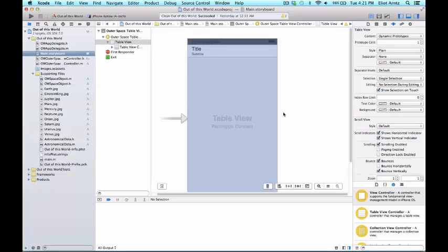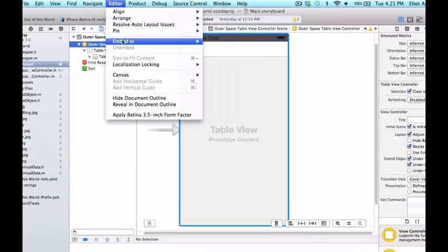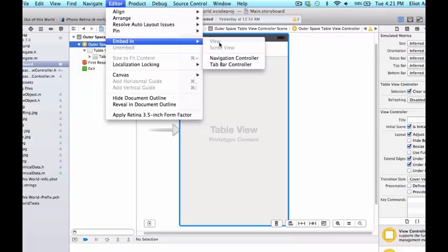So now that we've learned all about navigation controllers, how do we add one to our project? We'll open up your out of this world Xcode project and go to your storyboard. And we're going to make sure that we have our view controller selected in our scene outline. We can go to editor and go down to embed in and we're going to select navigation controller.